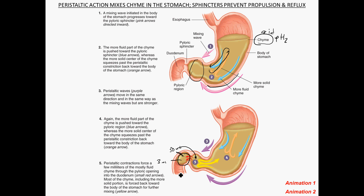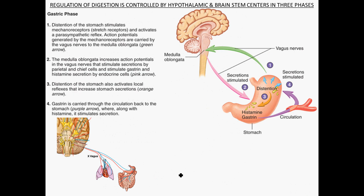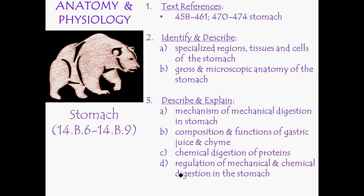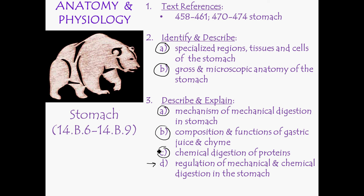We'll talk about the control and regulation of digestion in another screencast. To summarize what we've covered: the specialized regions, tissues, and cells of the stomach; the gross and microscopic anatomy; mechanical digestion at the pyloric end; the composition and functions of gastric juice and chyme; and a bit about the chemical digestion of proteins. Thanks for listening.